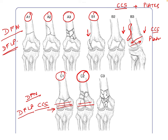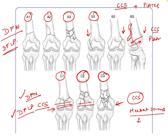In C3, as the articular surface is more comminuted, we have to use multiple cancellous cannulated screws in addition to Herbert screws, and then supplement with a distal femoral locking plate. This is the AO Müller classification for distal femoral fractures, which dictates the type of fractures and the type of intervention which can be used to treat them.